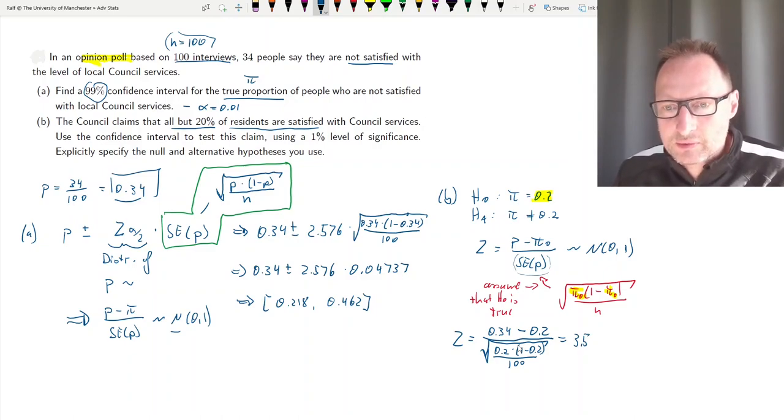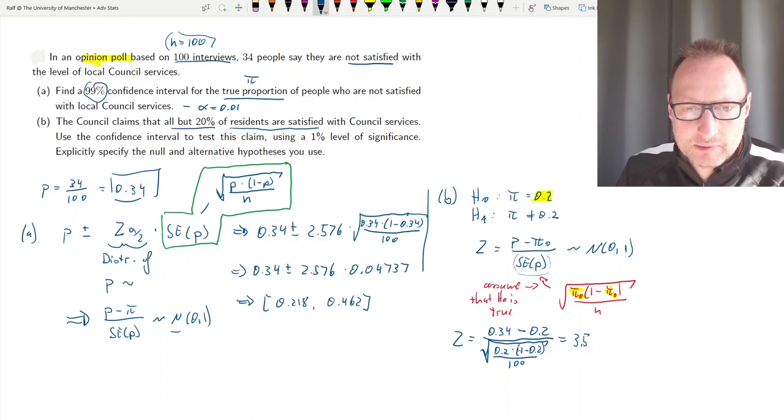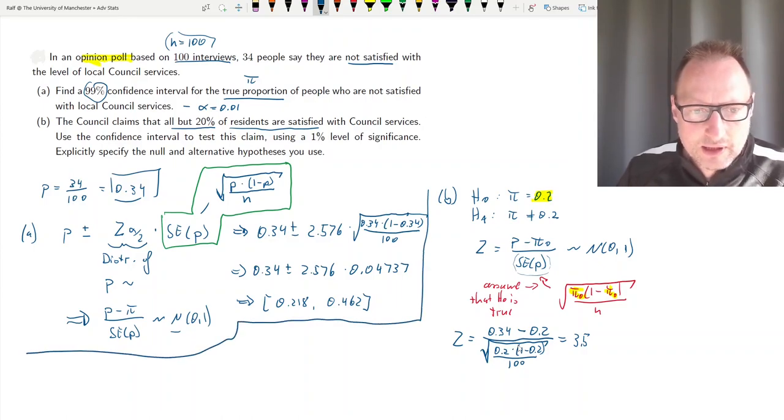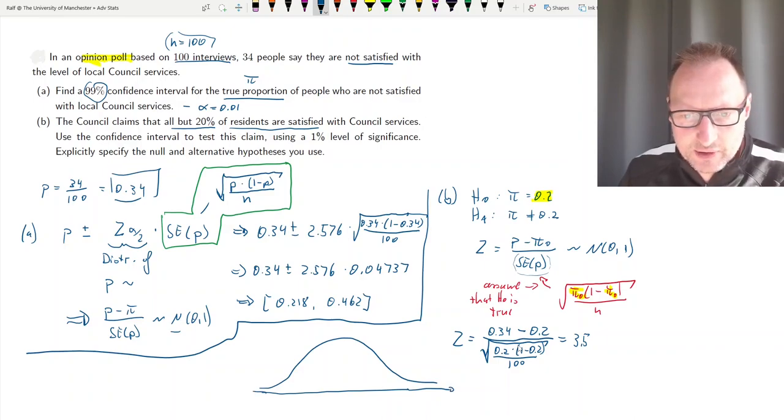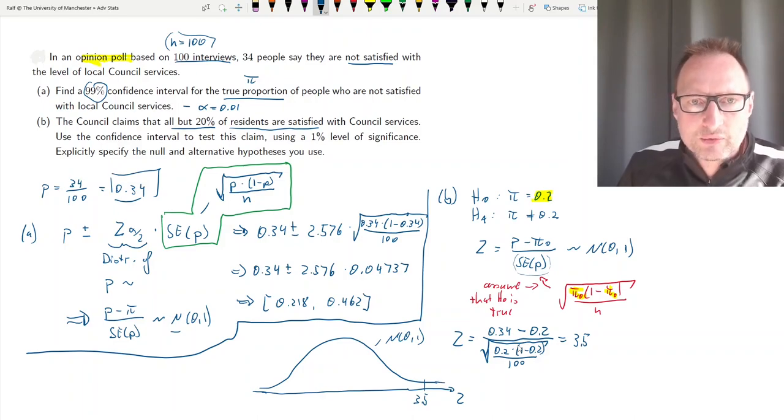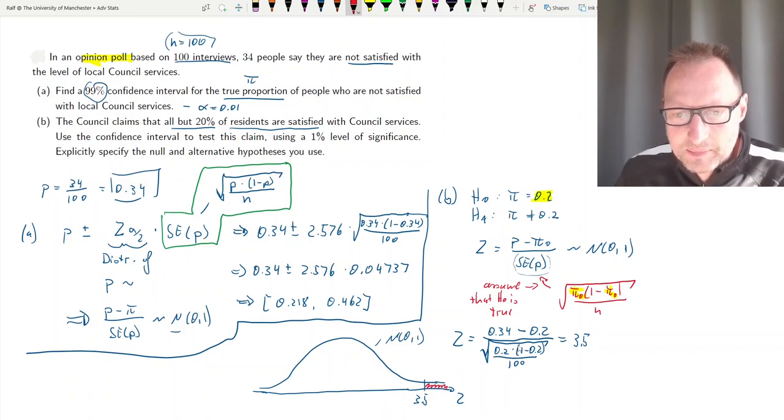Now of course, we know to make a decision about the null hypothesis, we need a p-value. Let's do a little sketch. We're looking at the standard normal distribution as a sampling distribution for our test statistic z. That is zero one. Our test statistic is 3.5. So what we are after is the size of the tail. But given we are having a two-tail test statistic, we are looking at the size of the tail in both ends of the distribution.